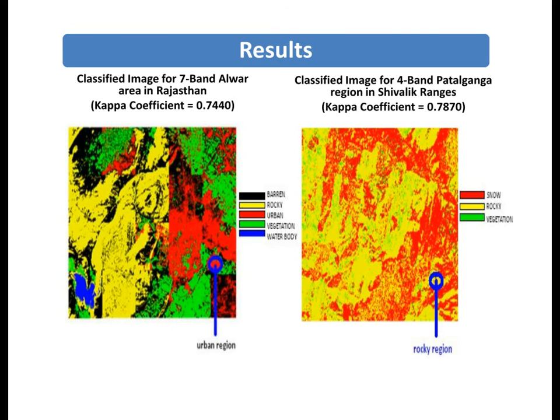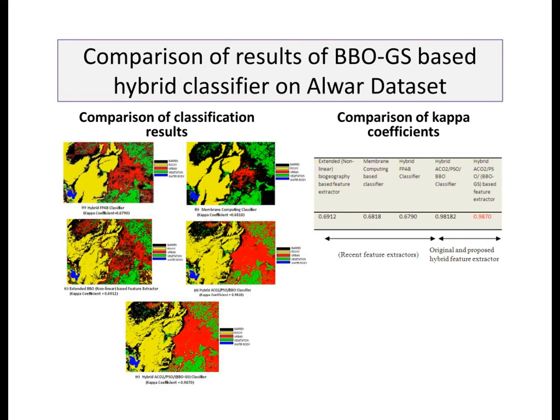The second figure is the classified image for the four-band Patalbhunga region in the Shivalik ranges, which achieves a classification accuracy of 78.7 percent.